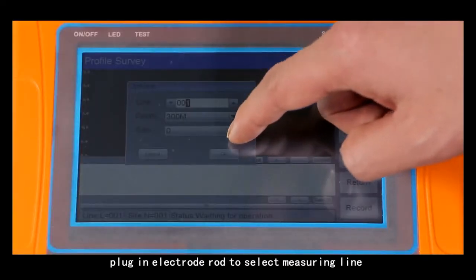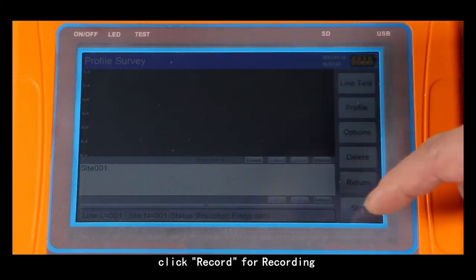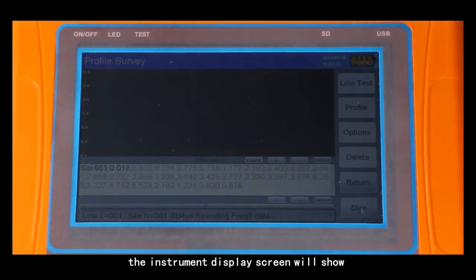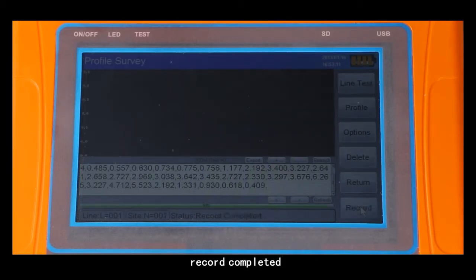Plug an electrode rod to select a measuring line. Click record for recording. After data collection, the instrument display screen will show record completed with a reminder sound.